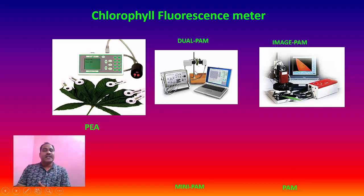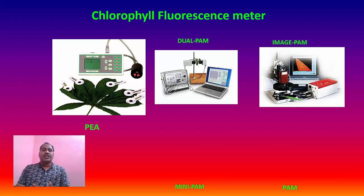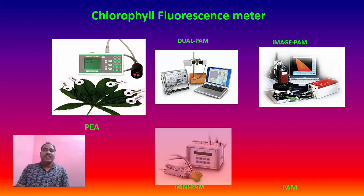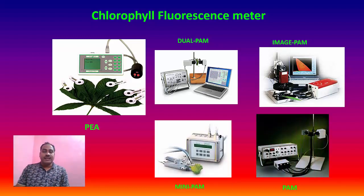Another instrument is the dual PAM — that is pulse amplitude modulated chlorophyll fluorescence — which is also generally used to measure chlorophyll fluorescence. Another is the image PAM, which takes the image of the chlorophyll fluorescence and converts that image into different types of biophysical and biochemical parameters.